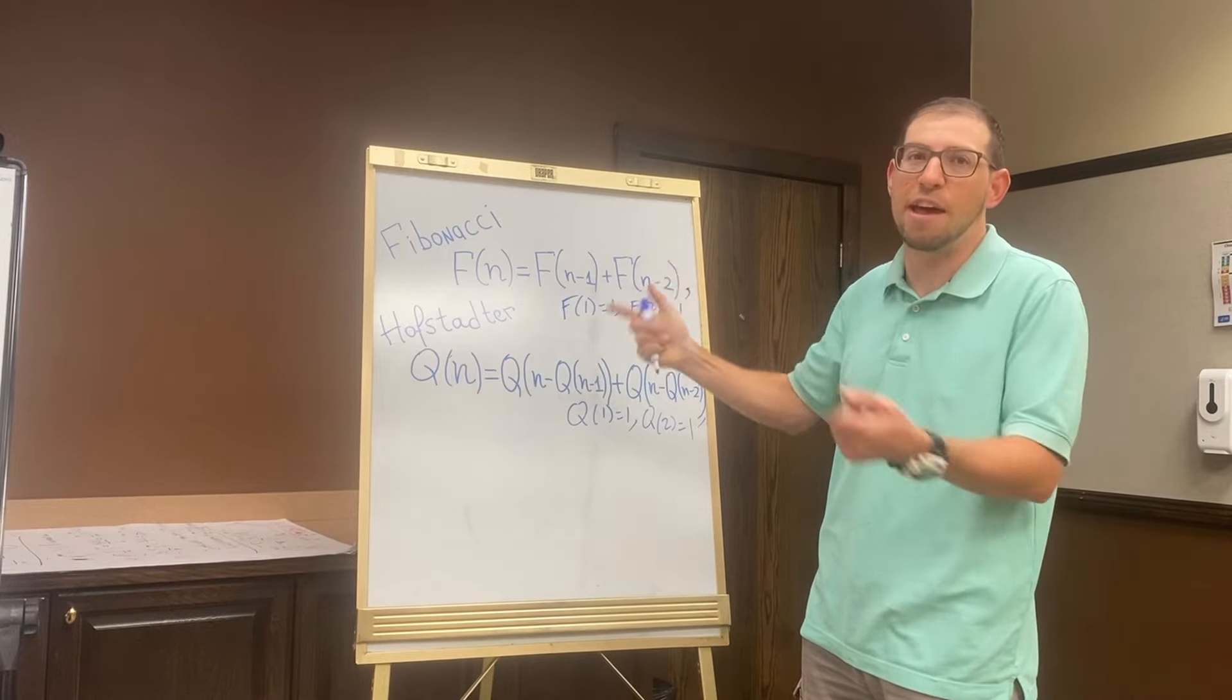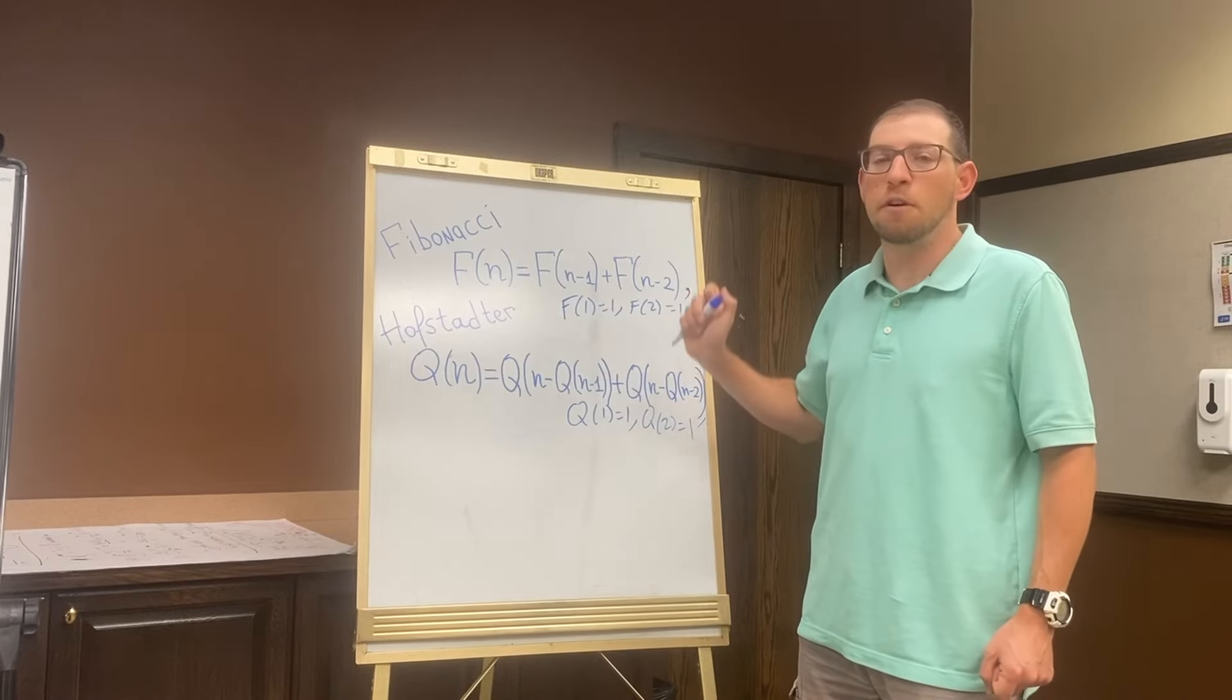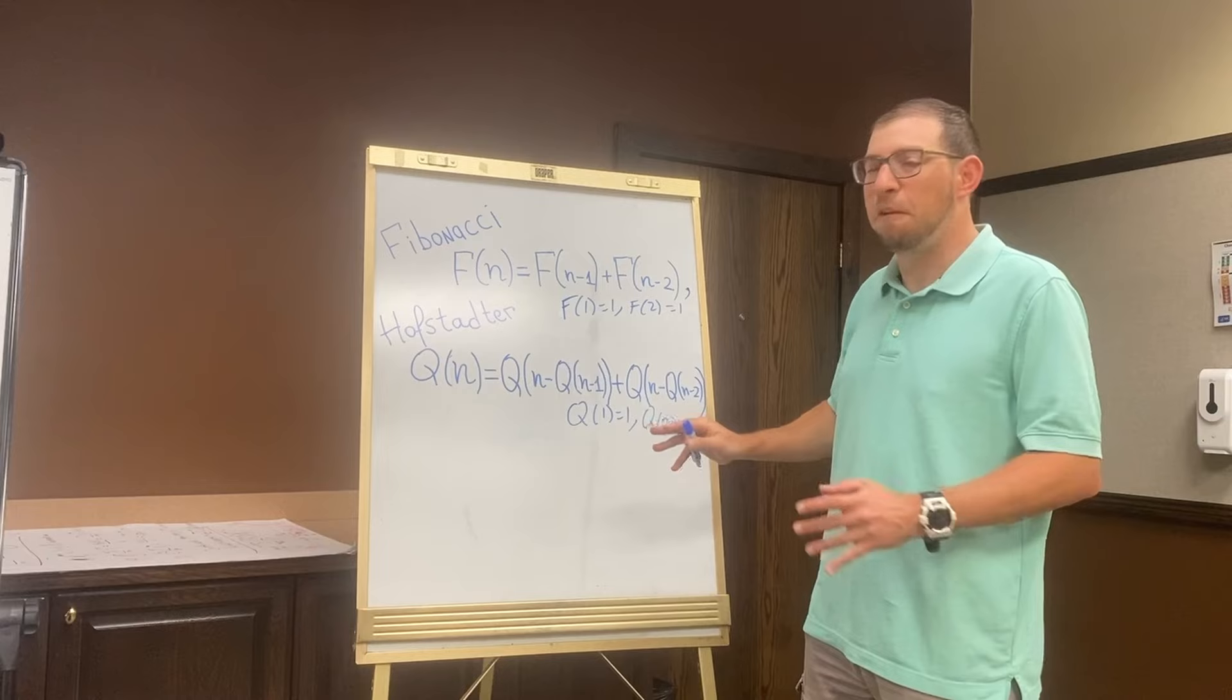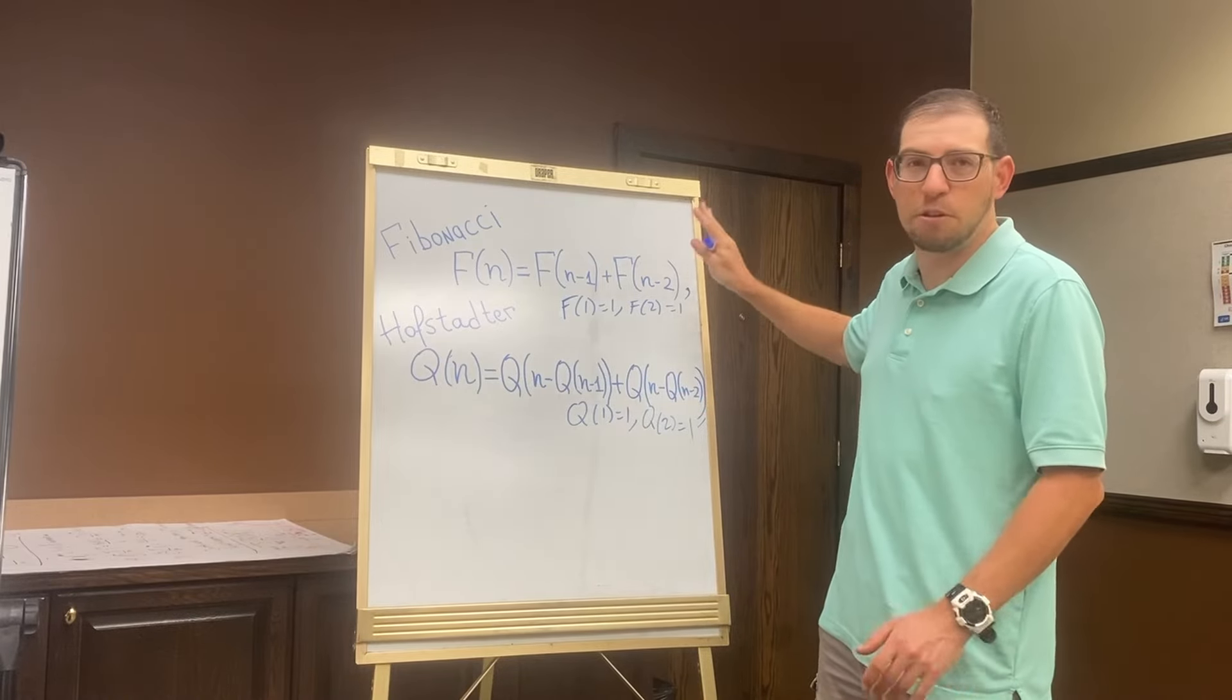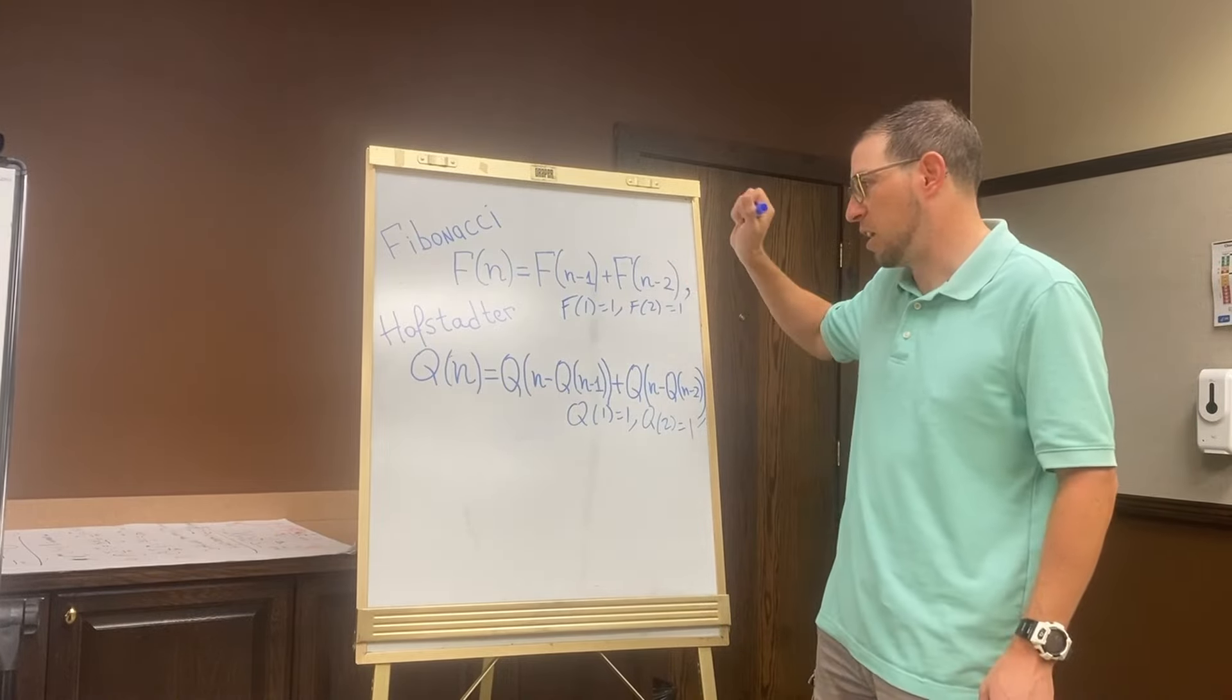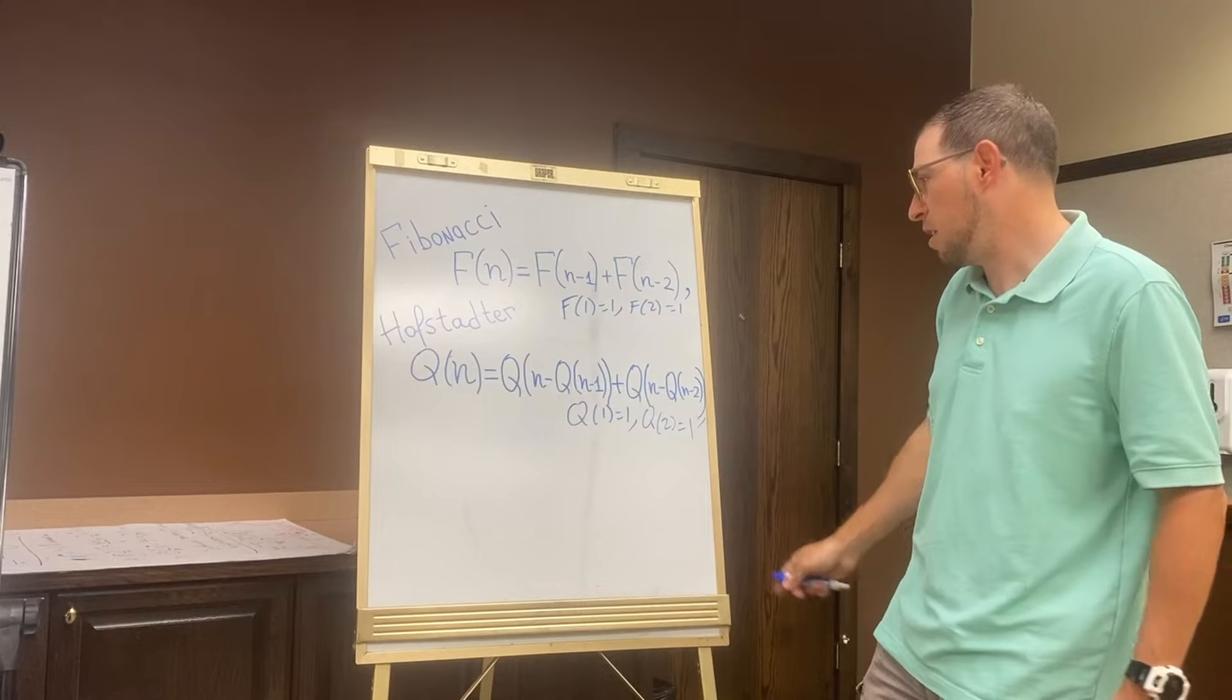For the Q sequence, you look at the previous two terms—they tell you how far to go back, then you add those terms together. The resulting sequence is very different from Fibonacci. Whereas the Fibonacci sequence we have a closed formula for the nth term, really well understood, really easy to predict what's going on, this sequence you can compute the terms, but it's very hard to understand.